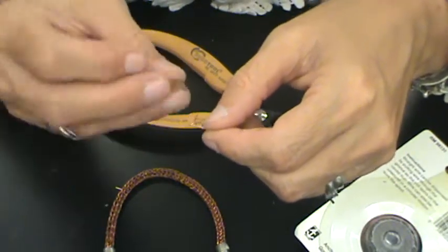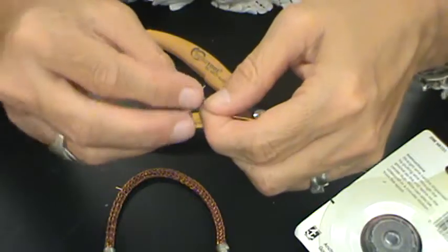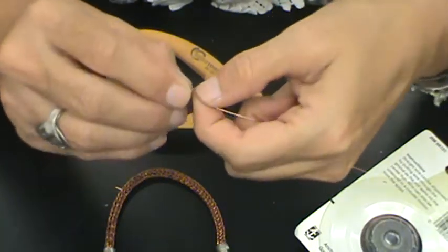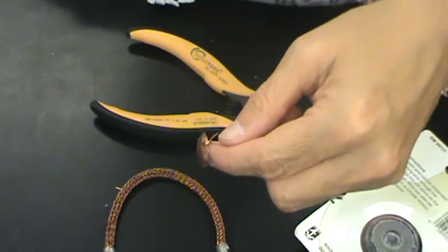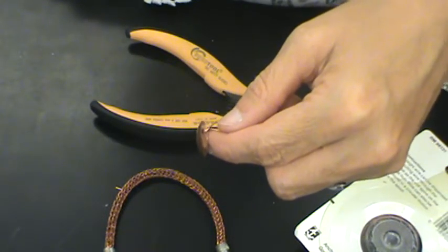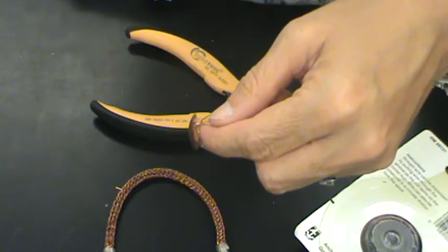Instead I am sliding on this little dome piece to hang as a charm and then I'm going to wrap it. Actually those flat nose pliers are kind of hard to use when you've got to get into a tiny spot.